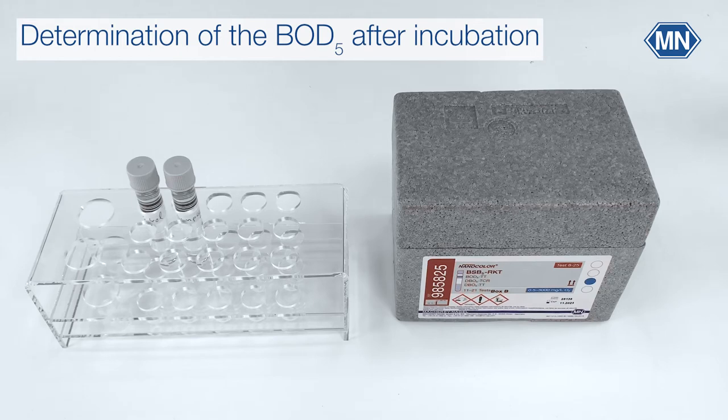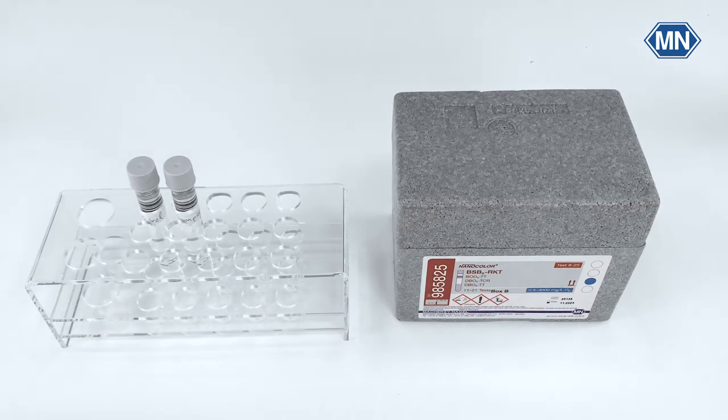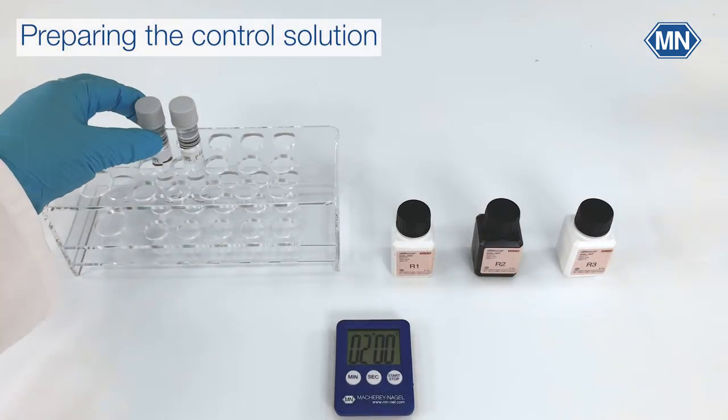After five days of incubation at 20 degrees in the dark the concentration of dissolved oxygen must be determined. For this you need all incubated test tubes as well as the reagents from box B. First take the control solution tube.